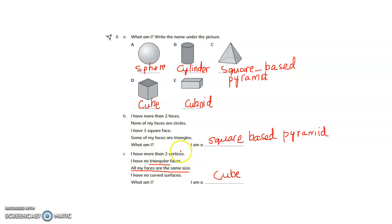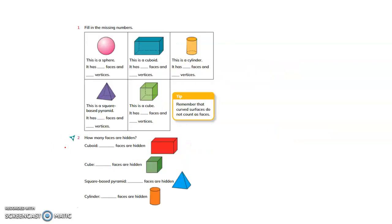Of course, it has more than 2 vertices — a cube has 8 vertices. So, I hope this is clear. Now, moving forward.